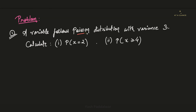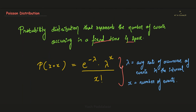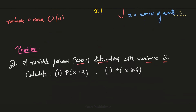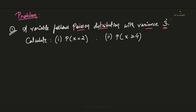Here is our very first problem. A variable follows Poisson's distribution and has a variance of 3. We have to calculate first the probability at x equals to 2, and next the probability at x greater than or equal to 4. In Poisson's distribution, variance is nothing but the mean, represented by lambda. So as per this question, lambda equals 3.